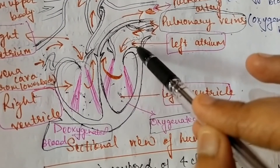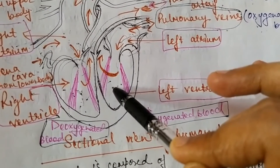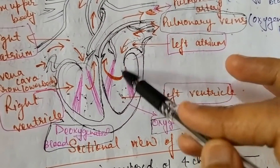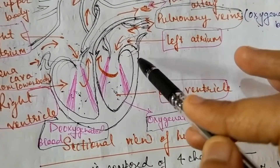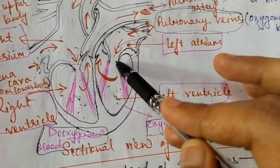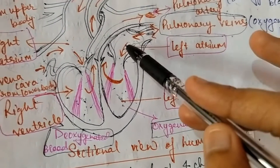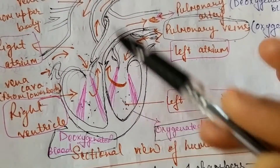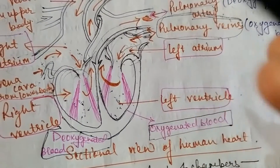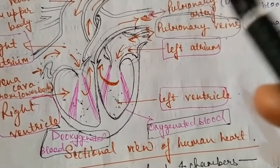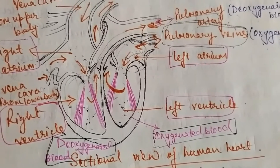The walls of the ventricles are very thick because they pump blood to the various organs. Between the atria and ventricles there are valves — the bicuspid valve and tricuspid valve. These valves ensure that blood does not flow backward when the atria and ventricles contract, so blood flows only in one direction.